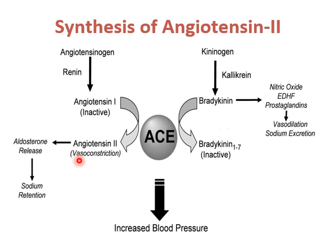One of the functions is that it produces vasoconstriction, and that vasoconstriction is helpful to increase blood pressure. Another function is the release of aldosterone, and the function of aldosterone is to retain sodium and water. Retention of sodium and water enhances the fluid volume, and that increased volume can further increase blood pressure. Angiotensin 2 further metabolizes to its metabolic product, angiotensin 1-7, with the help of another type of angiotensin converting enzyme known as ACE type 2.